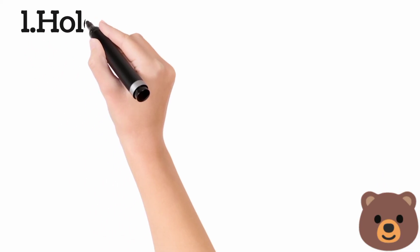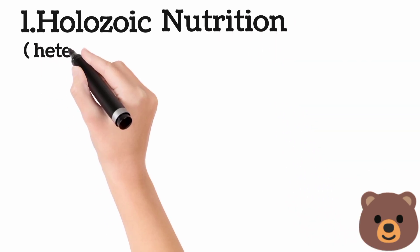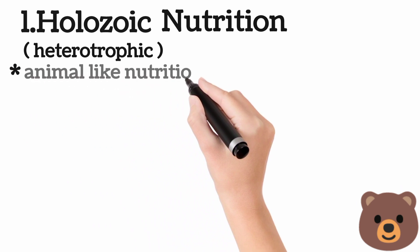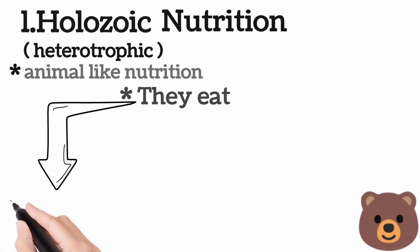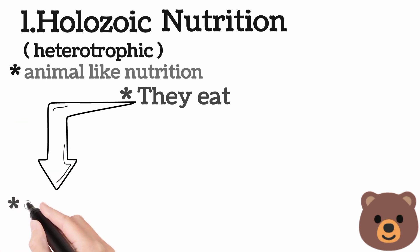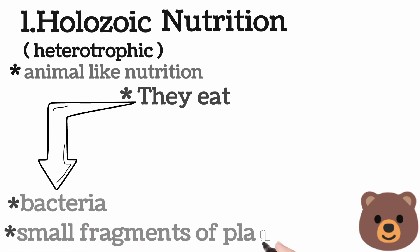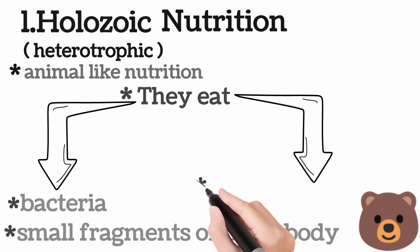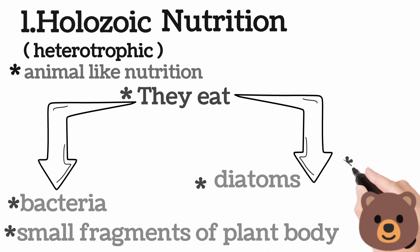Number one is holozoic nutrition, also called heterotrophic nutrition. Animals cannot make their own food — this is animal-like nutrition. So protozoa which cannot make their own food eat bacteria, small fragments of plant body, diatoms, and algae.